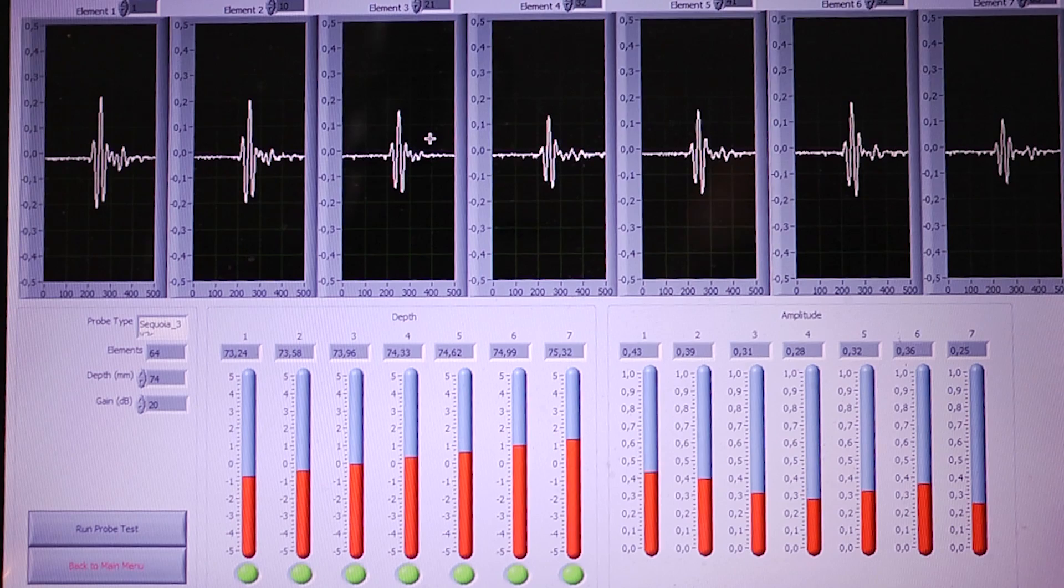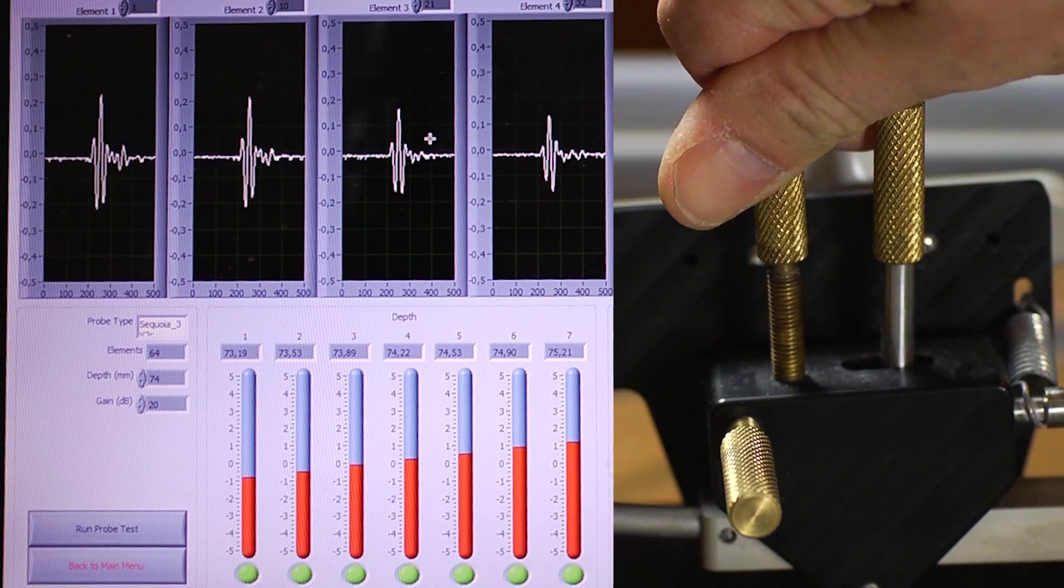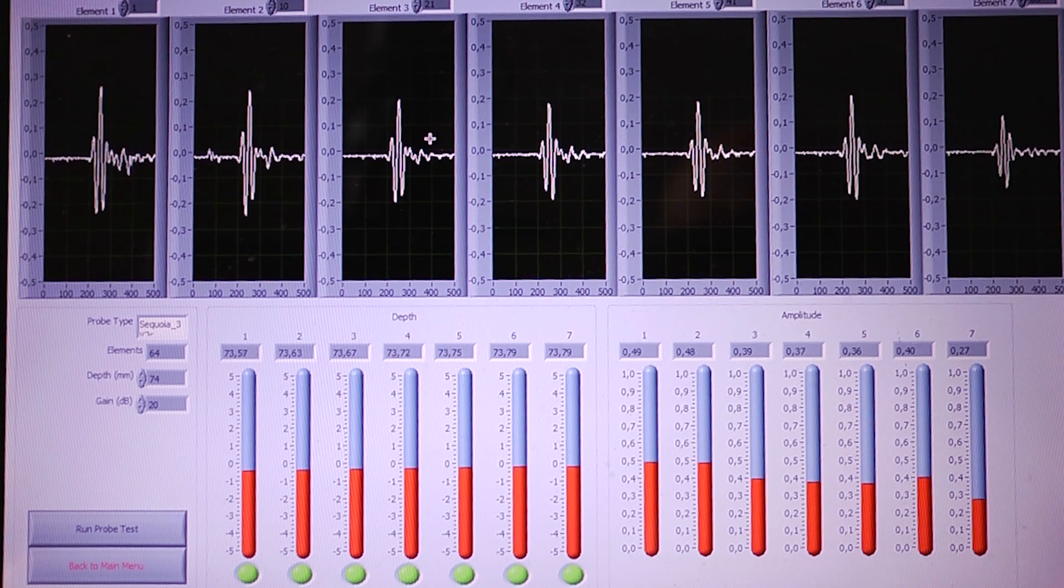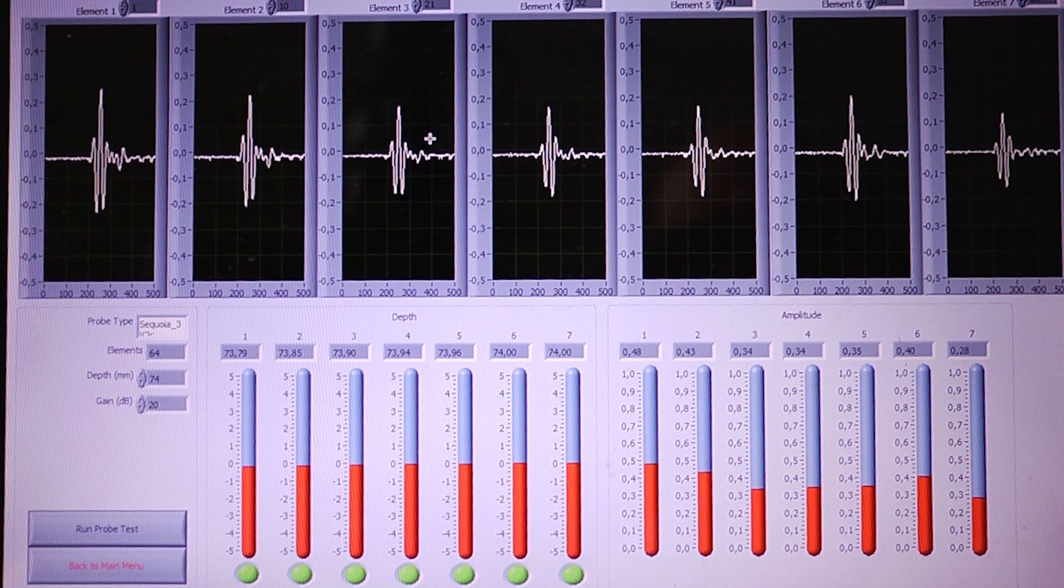In alignment we will adjust the probe correctly against the target. The seven bars on the left hand side tell you the depth against the target, and on the right side you have the amplitude adjustments against the target. When both these are optimized you can start to test.